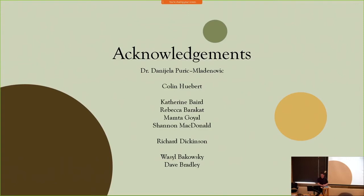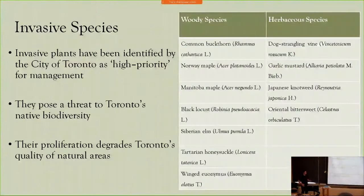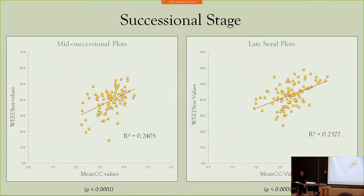A question from the moderator: you have those two metrics — mean CC and weedless. Mean CC had to do with successional stage. Are you intending that those two axes are entirely orthogonal or independent of one another? The speaker responds that yes, they are based on different elements of the plant community. However, the usefulness of plotting them together comes from the fact that they respond in similar ways to disturbance and other factors within Toronto's natural areas, making them a helpful tool for prioritizing areas of management.